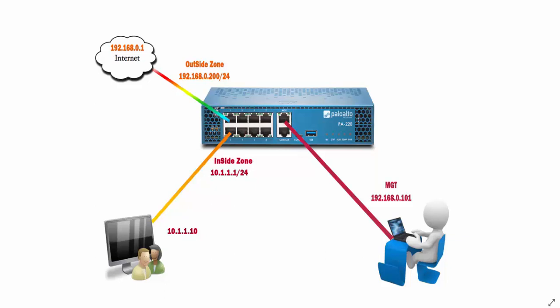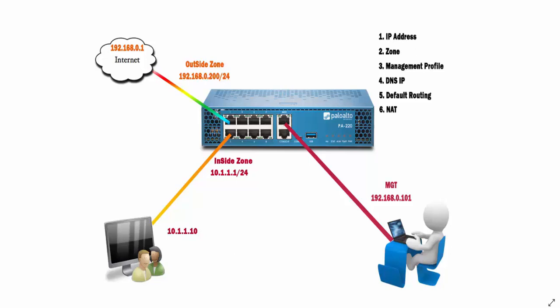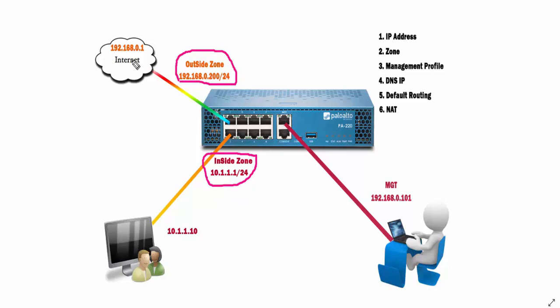Hi friends. In the last video, we were able to access the outside zone. The iPad IP is 192.168.0.218/24. We will be able to access the inside zone and the internet as well. The internet gateway is 192.168.0.1. We will be able to access the inside zone.